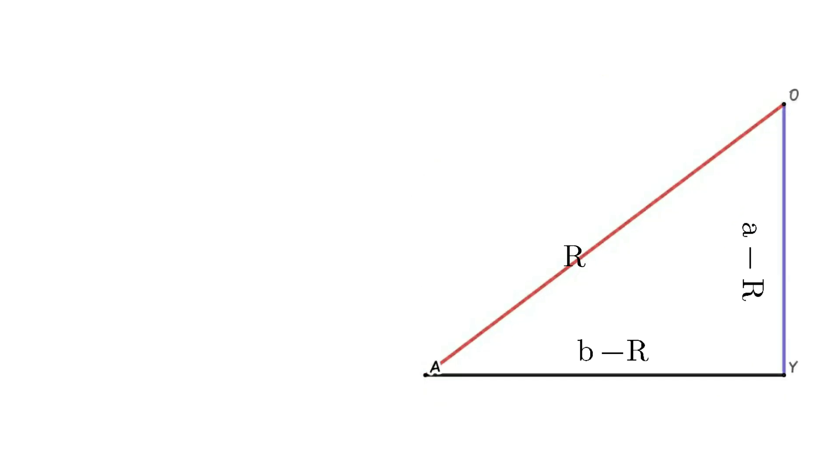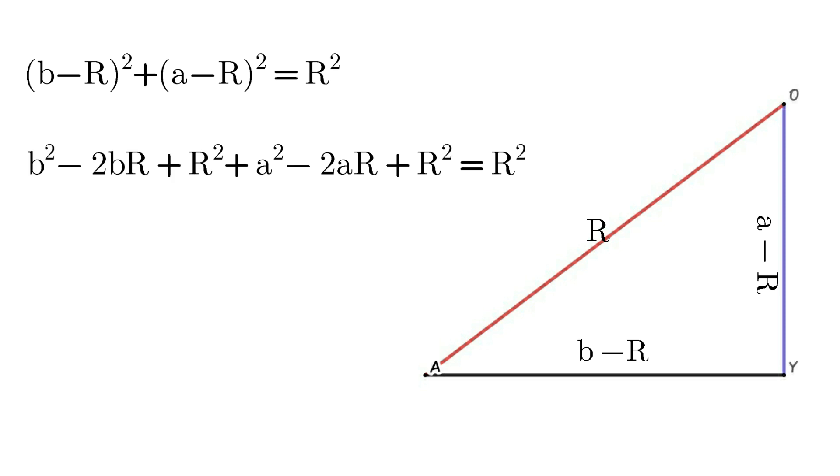Consider the right triangle. We can apply the Pythagorean theorem here. Then (B minus R)² plus (A minus R)² equals R². That is, B² minus 2BR plus R² plus A² minus 2AR plus R² equals R².